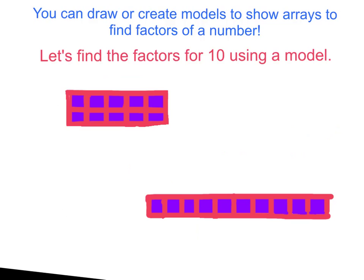You can draw or create models to show arrays to find factors of a number. So let's find the factors for 10 using the models. If you look right here, I have 2 models for 10. I have 2 rows of 5, so this would be 2 times 5. And if I add up all the pieces, I have a value of 10. On this one, I have 1 row of 10 units. So I would have 1 times 10 equals a value of 10. So all the factors of 10 are going to be 1 and 10 and 2 times 5. There are 4 different factors for 10.